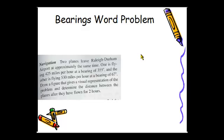If we read the problem, we have two planes leaving an airport at approximately the same time. One is flying 425 miles per hour at a bearing of 355 degrees and the other is flying 530 miles per hour at a bearing of 67 degrees. And after two hours we want to find the distance between the two planes.